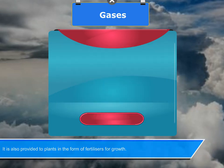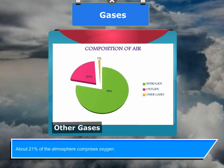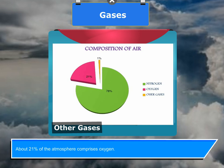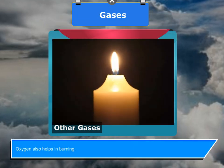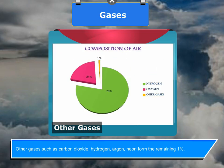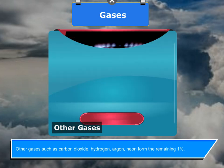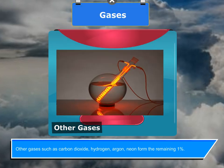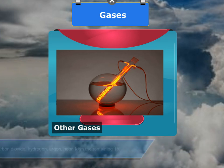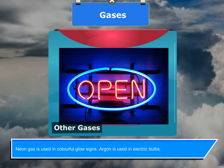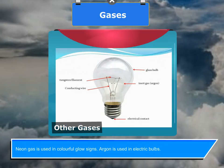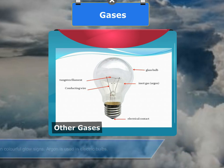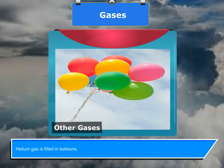About twenty-one percent of the atmosphere comprises oxygen, which also helps in burning. Other gases such as carbon dioxide, hydrogen, argon, and neon form the remaining one percent. Neon gas is used in colorful glow signs, argon is used in electric bulbs, and helium gas is filled in balloons.